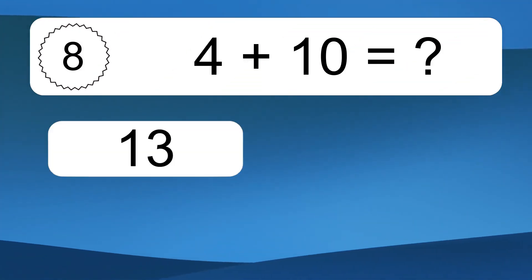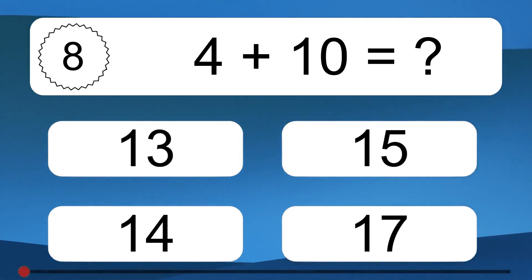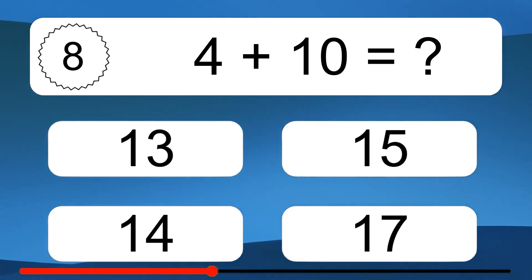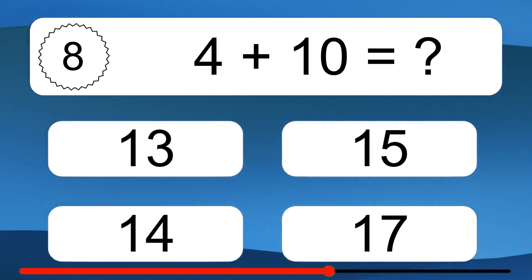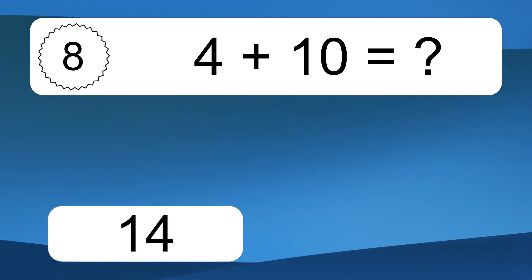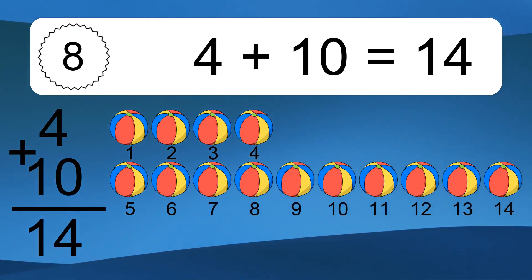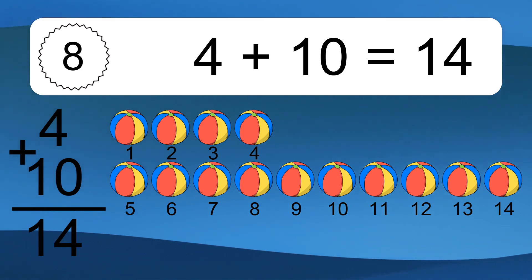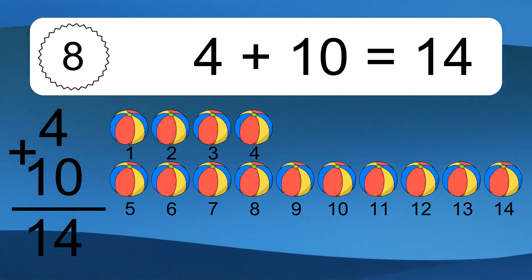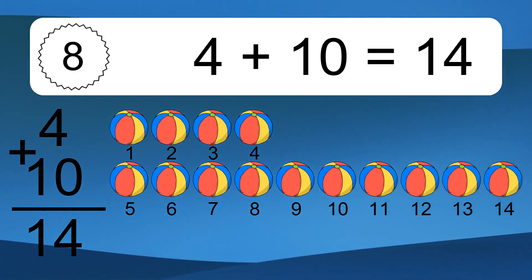4 plus 10 equals what? 4 plus 10 equals 14. Let's count it. 1, 2, 3, 4, 5, 6, 7, 8, 9, 10, 11, 12, 13, 14.